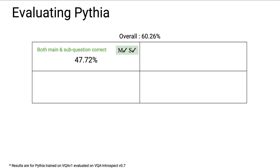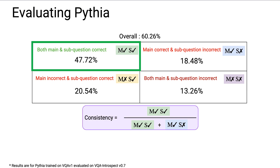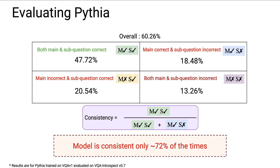There are four possible outcomes when evaluating the reasoning questions with associated perception sub-questions. For instance, we find that models answer the main and the associated sub-question right 47.7% of the time. The model gets the main question right but gets the associated sub-question incorrect 18.5% of the time. We define consistency as the percentage of times the model gets the sub-question right given that it gets the main reasoning question right. We find that models are consistent only 72% of the time. This inconsistency suggests that the VQA model has not effectively learned how to answer the reasoning question and may not generalize to closely related reasoning questions with another image.